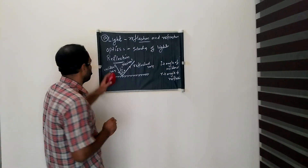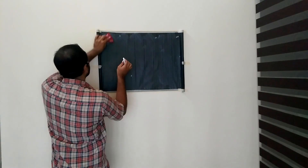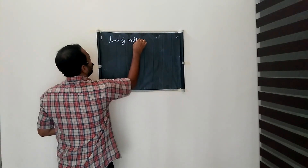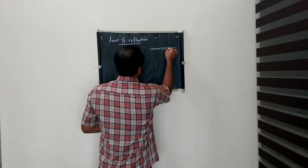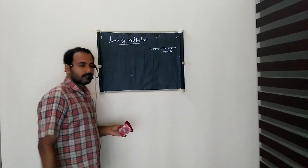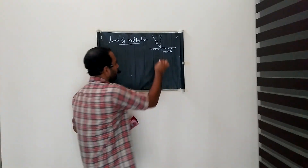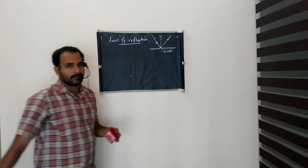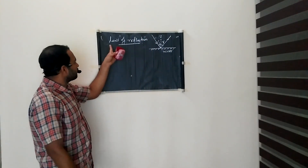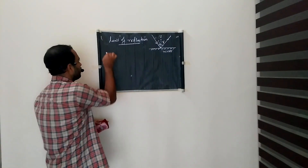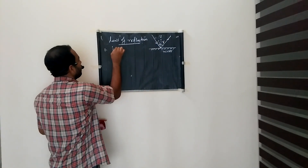There are two laws of reflection. We study this ray diagram: on a mirror or highly smooth surface, the incident ray, normal, and reflected ray are shown. The angle of incidence is marked as I and the angle of reflection as R. From experiments it is clear that I equals R.